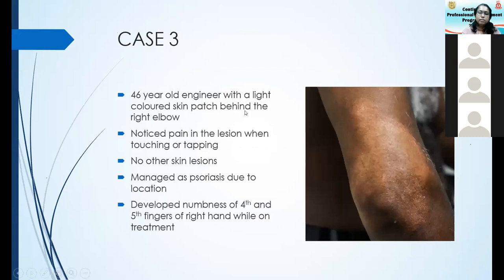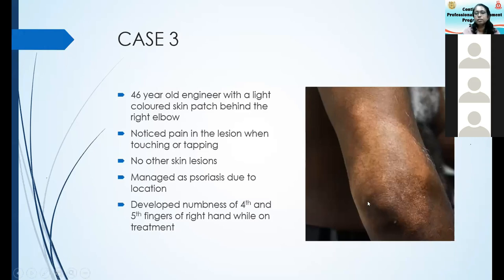Case three: a middle-aged engineer presented with a lesion at the back of his elbow. His complaint was severe pain in the elbow when resting it on the car door. There were no other skin conditions and he was managed as psoriasis, as the back of the elbow is a typical place for psoriasis. Then he developed numbness at the fourth and fifth fingers of the right hand, and he was referred to us — we made a diagnosis of leprosy.